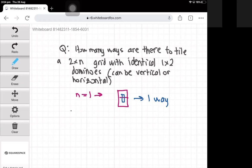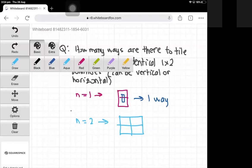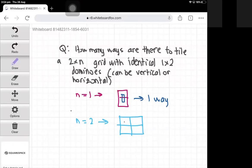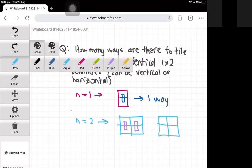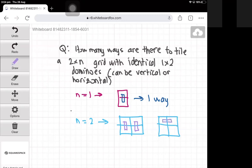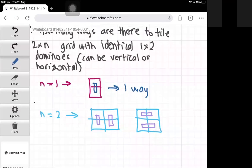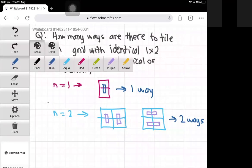If we now move on to n equals 2, the 2×2 grid can be tiled in two different ways, like this, or you can tile it like this. So we have two ways for tiling it for n equals 2.